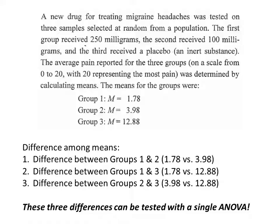Group one, who received 250 milligrams, has a mean of 1.78 on the scale. Group two, which received 100 milligrams, has an average pain score of 3.98. Group three, the placebo group, has a mean of 12.88 on the 0-to-20 scale.